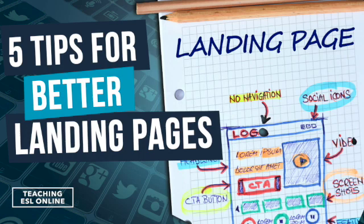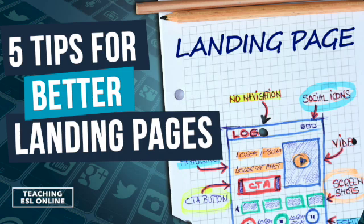Tip one is to talk about benefits and not features. This is general copywriting and marketing advice — to talk about benefits instead of features — but specifically try to get this into the header of your landing page. So let's say you have a free consultation. What people often say is just 'get a free consultation, it's free.' That's talking about the features of what you're offering. Whereas if you say something like 'with my free consultation, you'll have a much clearer understanding of how to move forward with your issue,' that really speaks to the person and highlights the benefit.